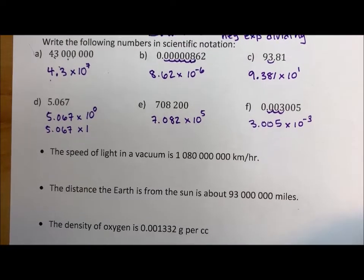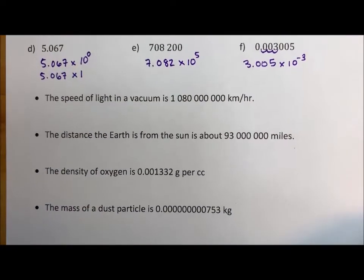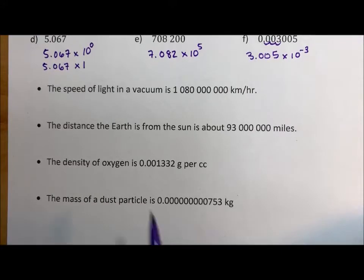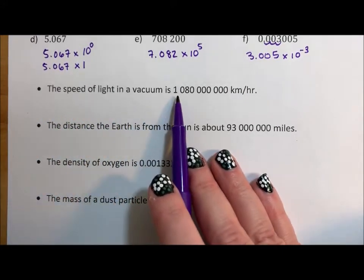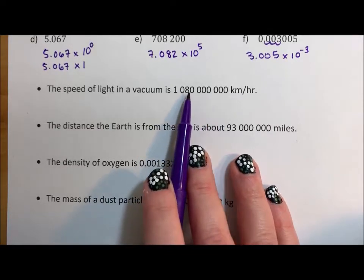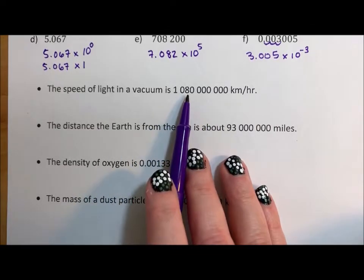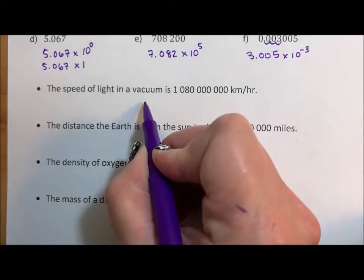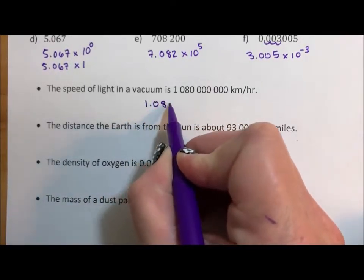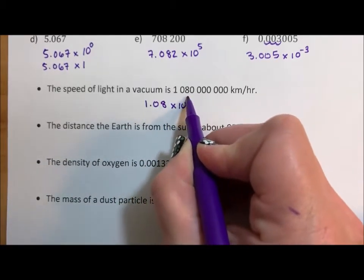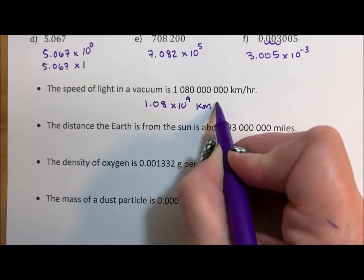So then I have a few, they're not really word problems, but they're like application, how this would be worded in the real world. The speed of light in a vacuum is tens, thousands, millions, billions, 1 billion 80 million kilometers per hour. Write this in scientific notation. So that's 1.08 times 10 to the one, two, three, four, five, six, seven, eight, nine kilometers per hour.